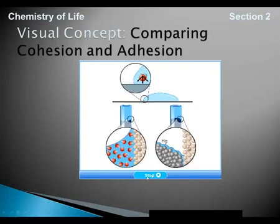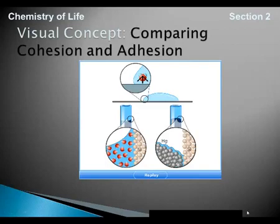When adhesion is stronger than cohesion, a positive meniscus occurs, such as with water in a graduated cylinder. When cohesion is stronger than adhesion, there is a negative meniscus, such as mercury in a graduated cylinder. That concludes the properties of water, and we're now going to get into solutions.